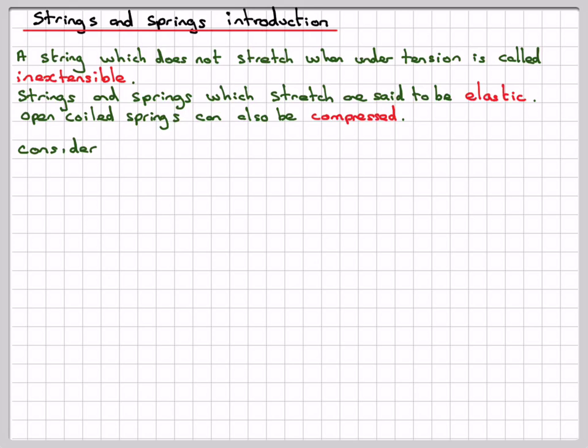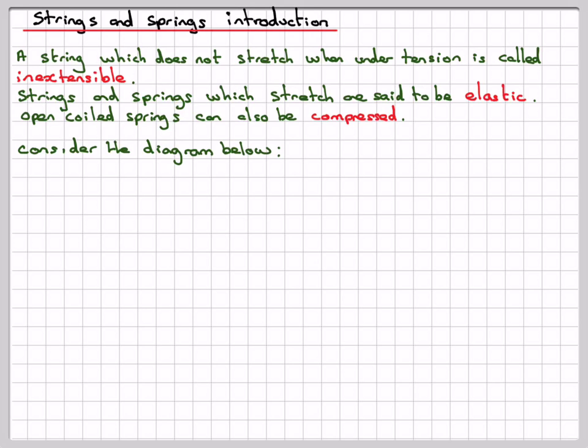Consider the diagrams below. Here we have three different situations. Case one is when no force is applied, then the length is called the natural length of the spring.